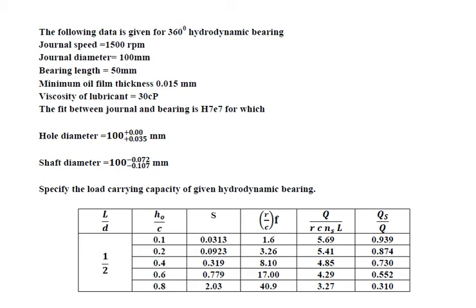Welcome back to the numerical on hydrodynamic bearing. The design of hydrodynamic bearing is done by the Raimondi-Boyd oil chart, which includes various performance parameters for the journal bearing. The various unitless parameters are mentioned as L by D, H upon C, the Sommerfeld number, R upon C into F, Q divided by RCNsL, and Q prime upon Q. This numerical has a small trick.